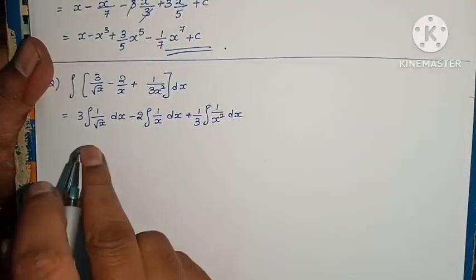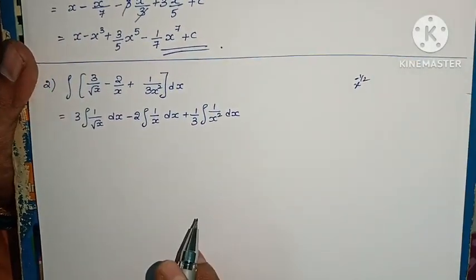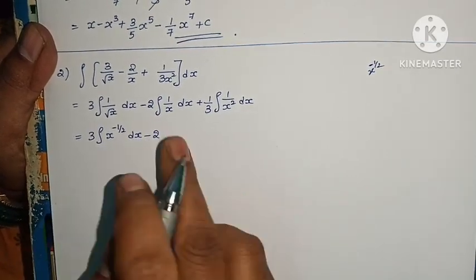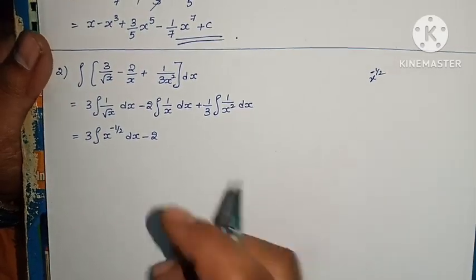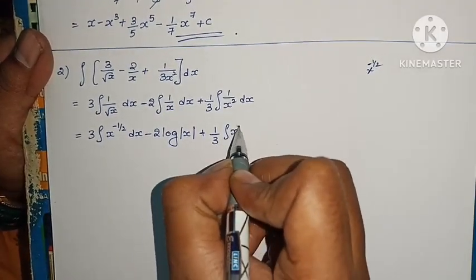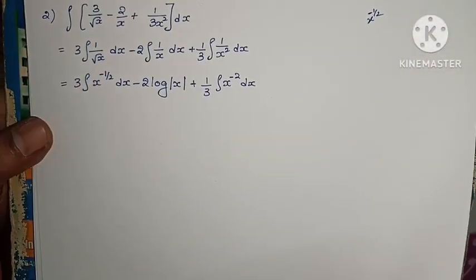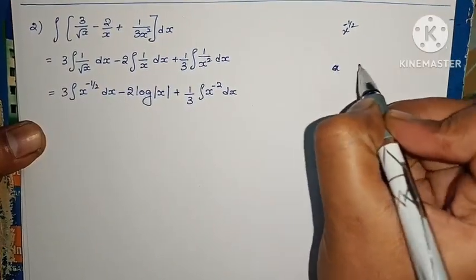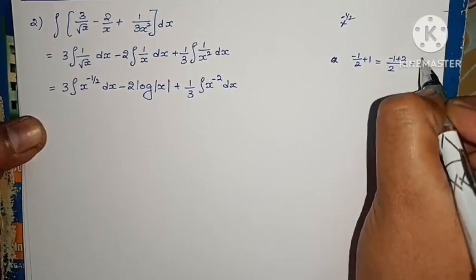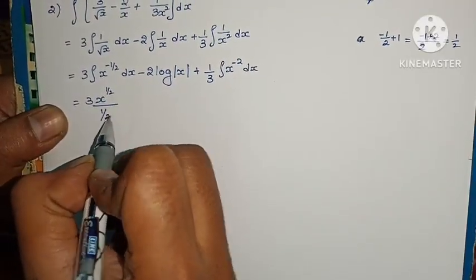Root x means x power 1 by 2. Taking it to the denominator makes it x power minus 1 by 2. So: 3 into integral x power minus 1 by 2 dx, minus 2 into integral 1 by x dx. The formula for integral 1 by x dx is log mod x. Plus 1 by 3 integral x power minus 2 dx. Applying the formula: minus 1 by 2 plus 1 equals 1 by 2.